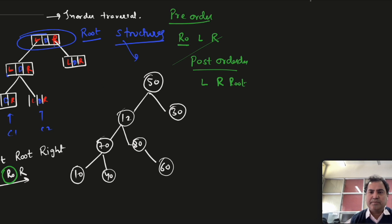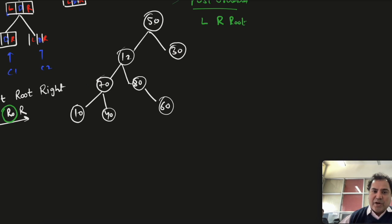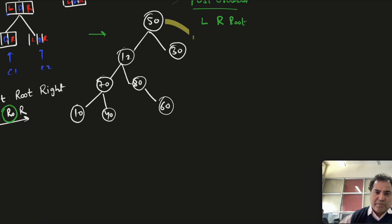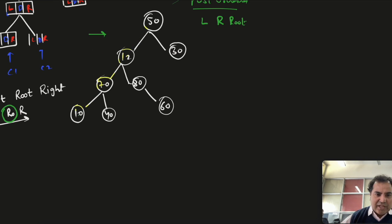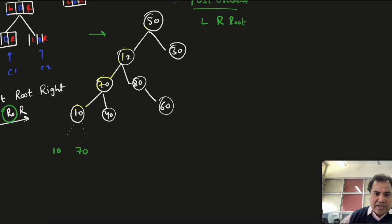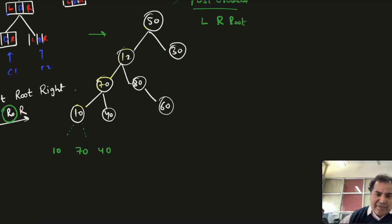Now let's look at how in-order traversal is applied on this tree. First we move towards the left from the root. From 50 we reach 12, from 12 we reach 70, and from 70 we reach 10. When we reach 10, there is no left — left is null. So no left is there, then root is 10, and there is no right either. So 10 is finished.